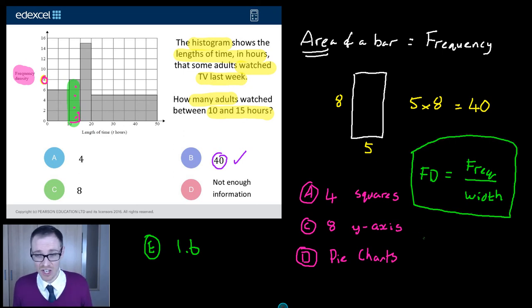There's a danger that if that's the only thing you know about histograms, you'll say, OK, what's the frequency of my group? Eight. What's the width of my group? Well, it goes from 10 to 15, so it's 5. Get my calculator out. What's 8 divided by 5? 1.6. And before you know it, and before you've read the question, you've ended up with that as your answer.